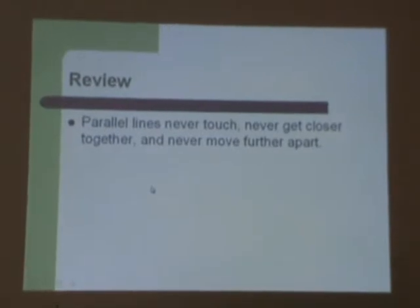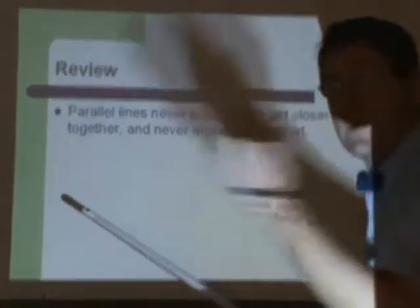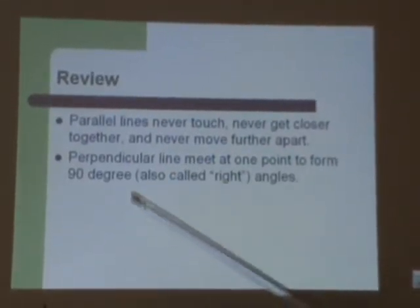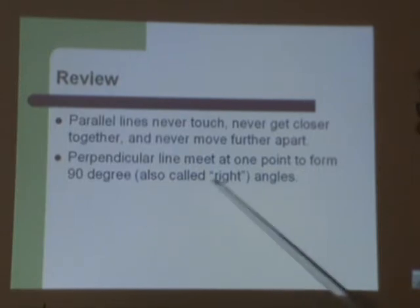Parallel lines never touch each other. They never get closer together. They never get further apart. They run right alongside each other forever. Perpendicular lines meet at one point and form a 90 degree angle, also called a right angle.